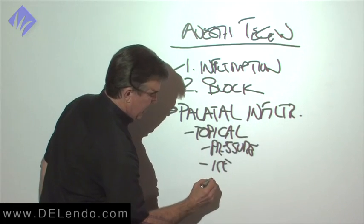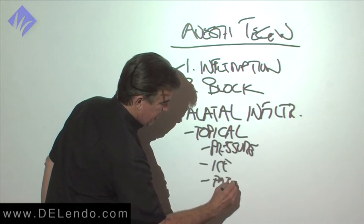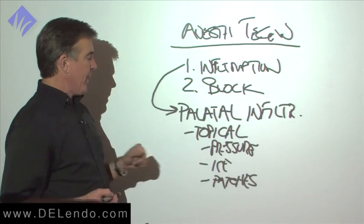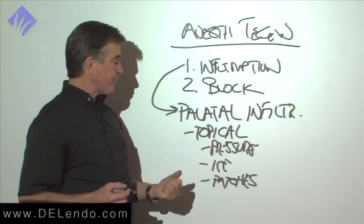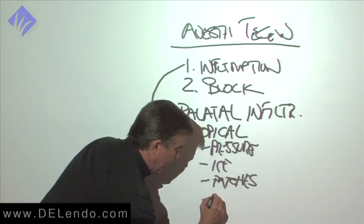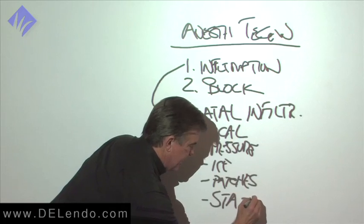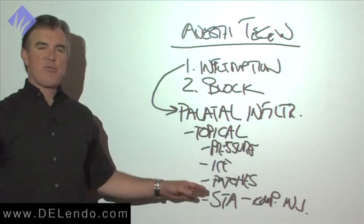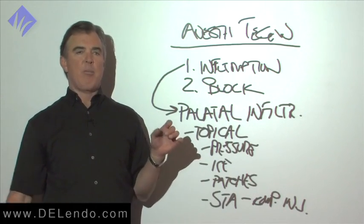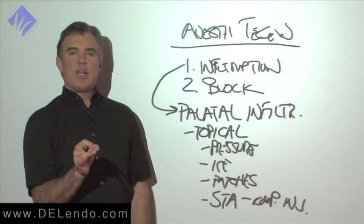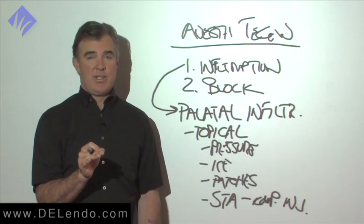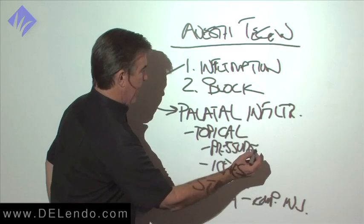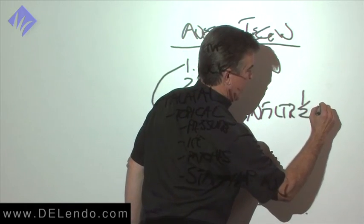They have some topical patches you can place on there, but the typical topical on a Q-tip, this gel, is not going to work for this. So ice, pressure, or if you use the Compudent or the Wand, it's called an STA, the computerized injection. These give extremely slow infiltrations, drop by drop by drop, and once you get it going, you just get your hand rest, finger rest, and just talk to the patient, talk to your assistant. You don't have to pay attention, and it's going to take about a minute to get that area infiltrated. About a half carpule.